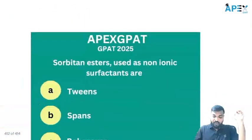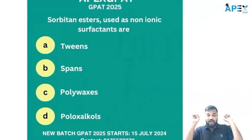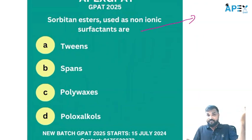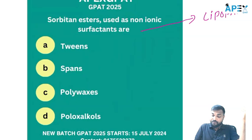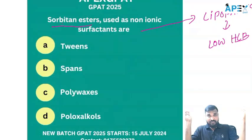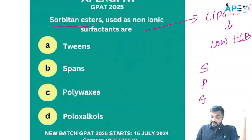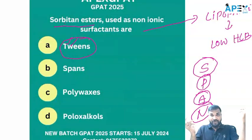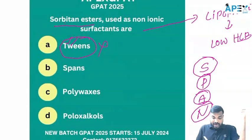Now we will look at the question: sorbiton esters used as a non-ionic surfactant. Non-ionic means they are asking about lipophilic — lipophilic means low HLB. They are asking about sorbiton esters. What is the sorbiton ester? That is the Span — sorbiton ester, particle aligning non-polar. Tweens are targeting water — hydrophilic, ionic — so the answer is not Tweens. Option B, we have Span. The answer is option B, Spans.